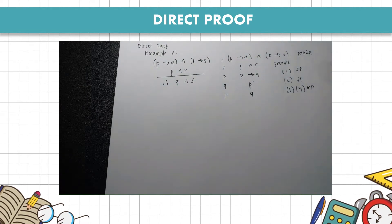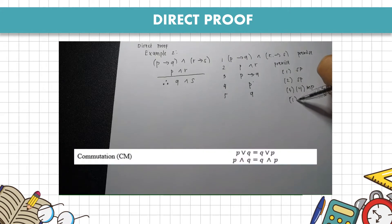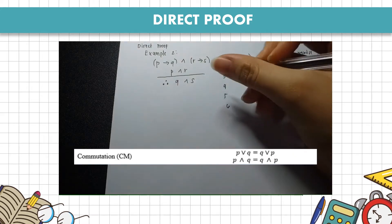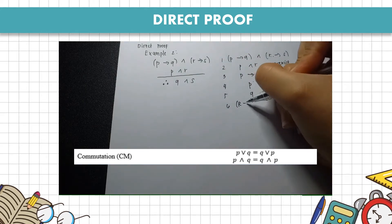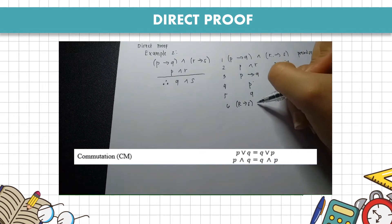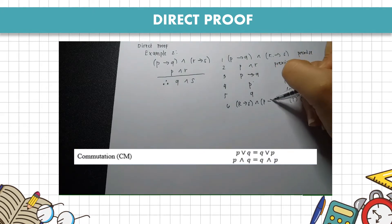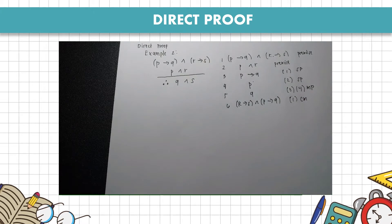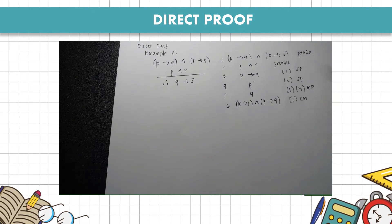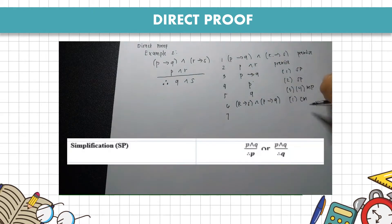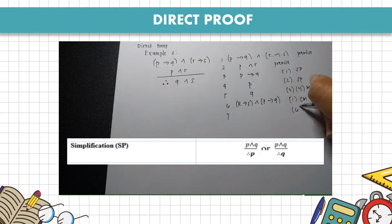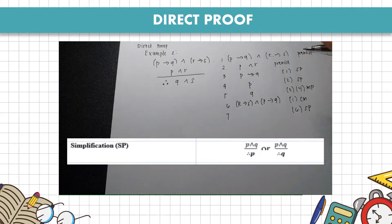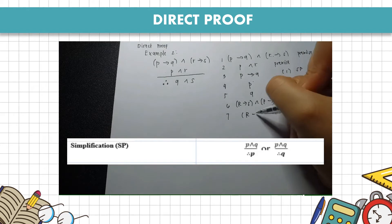Next, going back to premise 1, we apply commutation (CM) to get R implies S and P implies Q. Then from that, we apply simplification again to get R implies S.